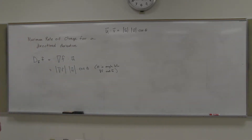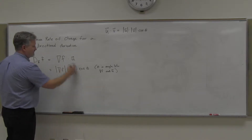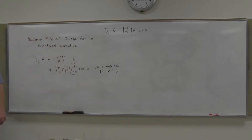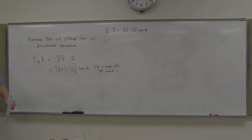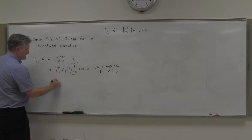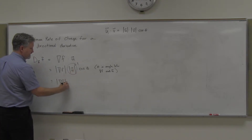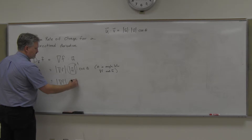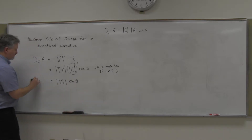This simplifies even further, because that's a unit vector — what would the magnitude of a unit vector be? By design, the unit vector is one unit long, so this equals one. That means it simplifies down to just the magnitude of the gradient times cosine of theta.